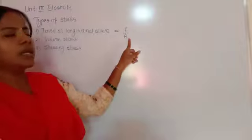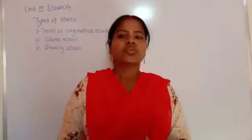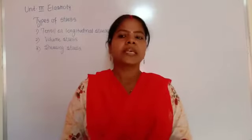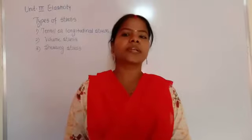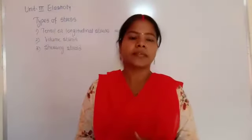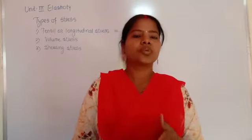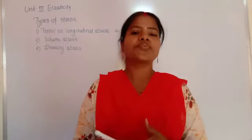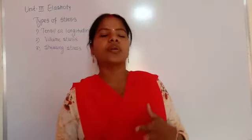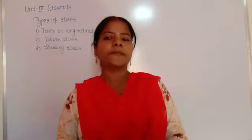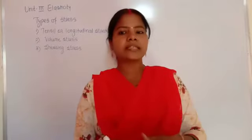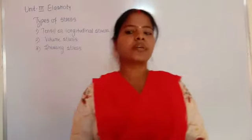When a rod is pushed at both ends with equal and opposite forces, its length decreases. The restoring force per unit area in this case is called compressive stress. Whether the force causes elongation or compression, both are forms of tensile or longitudinal stress — force per unit area acting along the length.